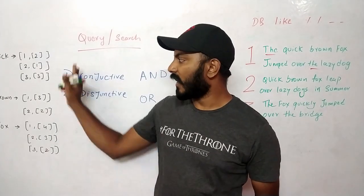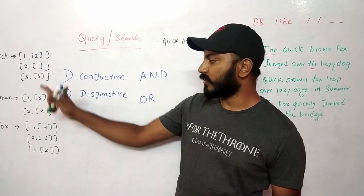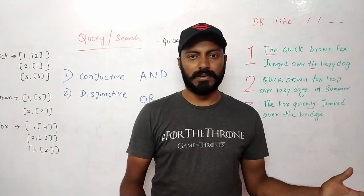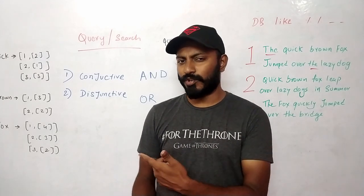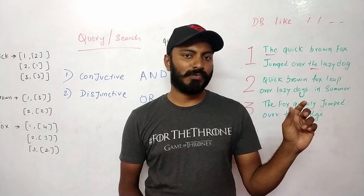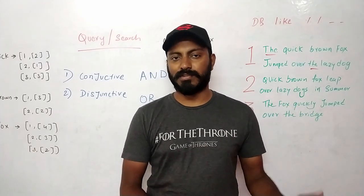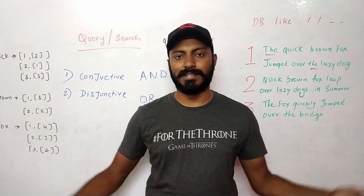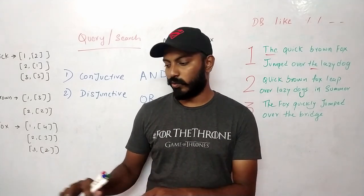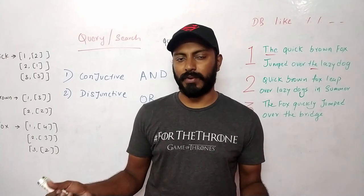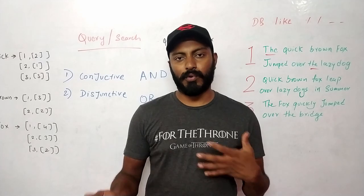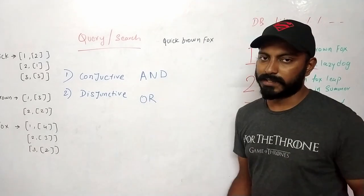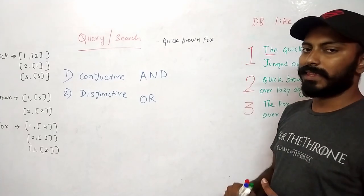Now let's discuss query and search. We've created the metadata. For single word retrieval — like 'quick', 'brown', or 'fox' — you just go directly to the data and show the result. But search is not always limited to one word. In Google, people type complete sentences. So your search system needs to allow more than one word. Let's take an example: searching for 'quick brown fox'.